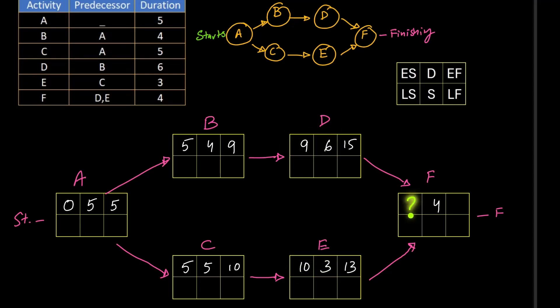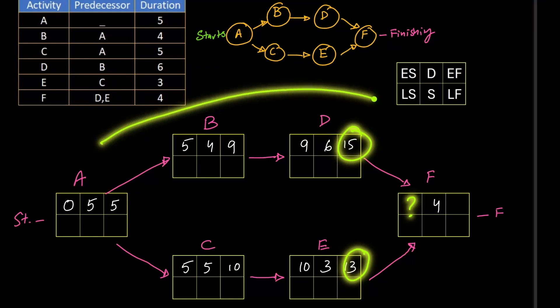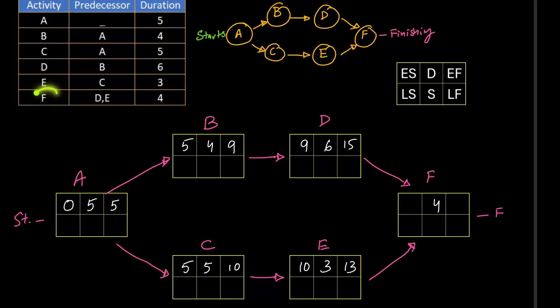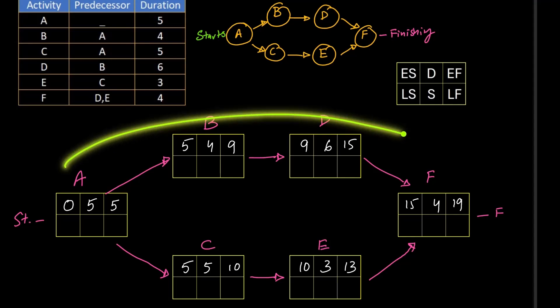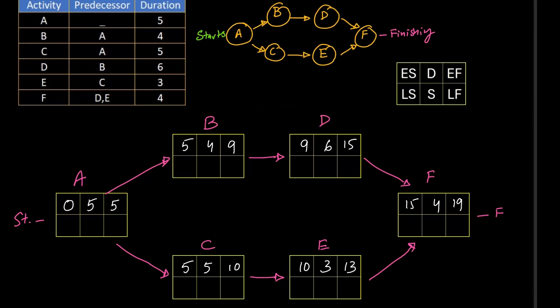This is the ES box, early start box of F. So what can be written, 13 or 15? Since we are in the forward pass of the project, we have to write 15, the highest number between the both, because F can only start after the completion of both. 15 plus 4 equals 19. Now forward pass is done with the upper values calculated. Now it's time to find out these three values one by one. And when the project finishes, EF equals to LF, means 19 will remain the same here.